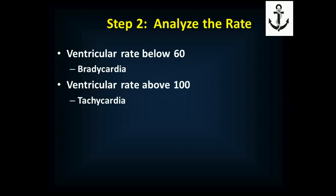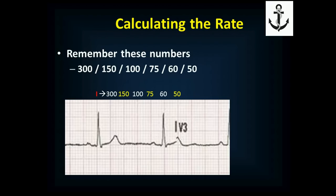To calculate heart rate, remember each large box is one-fifth of a second. Draw a line where a QRS complex falls on a large box line — if the next QRS is on the next big line, the rate is 300; the line after that, 150; then 100; then 75; then 60; then 50. You have to remember 300, 150, 100, 75, 60, 50. In this example, there are almost 5 lines between two QRS complexes, so the rate is somewhere between 60 and 75, closer to 60.